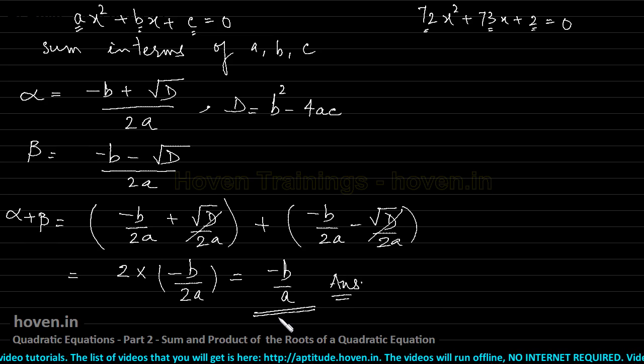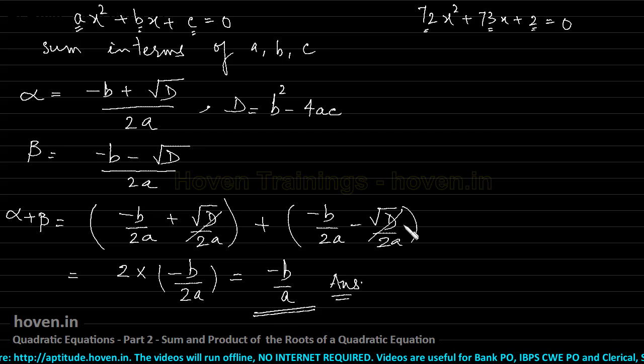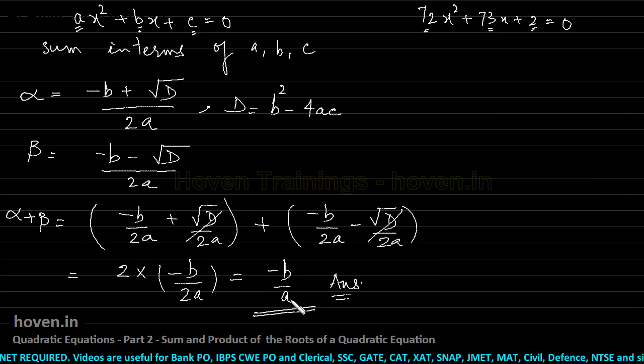So this is how the whole formula actually comes about, which many training institutes they say you to mug up and all, but this is the whole process in which this formula has actually been found out. With our luck, we were able to cancel these out and that led us to a simpler formula. So if we know the values of b and a, then we can without solving a quadratic equation, find out the sum of the roots of that equation.